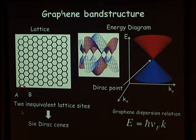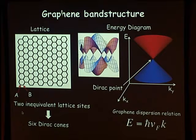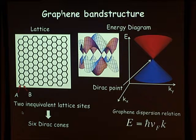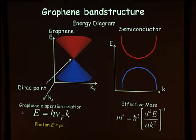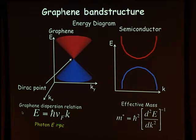In graphene, we have a hexagonal lattice of carbon atoms with two inequivalent sites, A and B. The band structure gives a dispersion relation where, if you zoom in on one of the Dirac points, you get a cone where energy versus momentum is given by E = ℏV_F·k — a linear dispersion relation. This should be contrasted with a traditional semiconductor like silicon or gallium arsenide, which has a parabolic energy-momentum relation. In graphene, this linear relationship makes it like a photon, where energy is proportional to momentum.